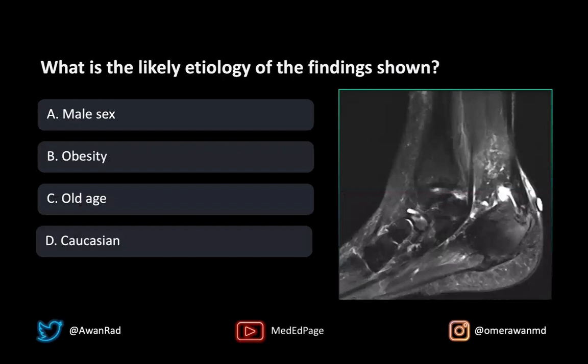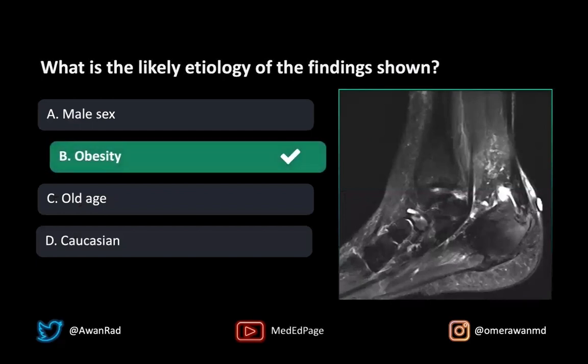We know that obesity is one of the risk factors for Haglund syndrome, making B, or obesity, the appropriate answer here.